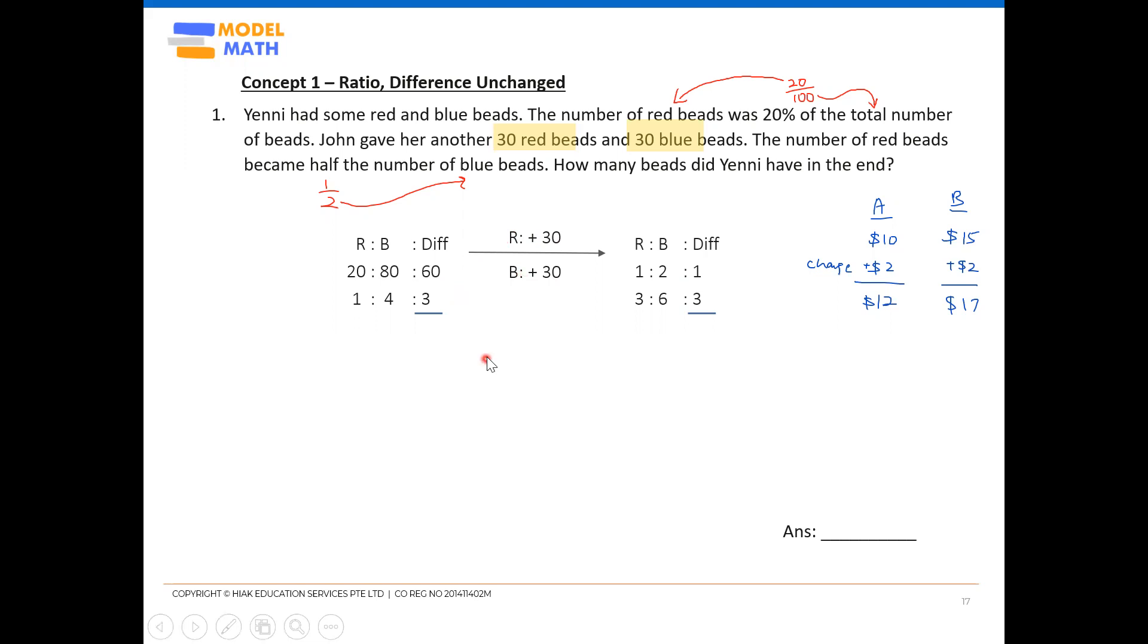Once you have established your common base, the next thing is you can start using your usable value to solve the question. Usable value means that your 30 and 30 are given as the values in the question. So you can choose either you want to use the red to solve or the blue to solve. Either one is okay because both will still lead you to the same answer later. Let's say I choose the red.